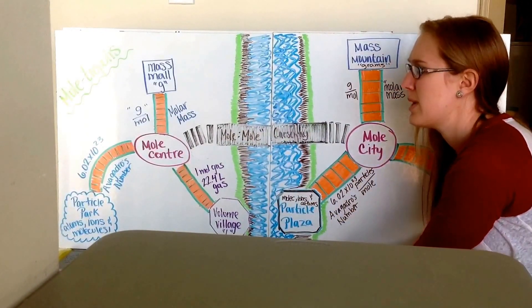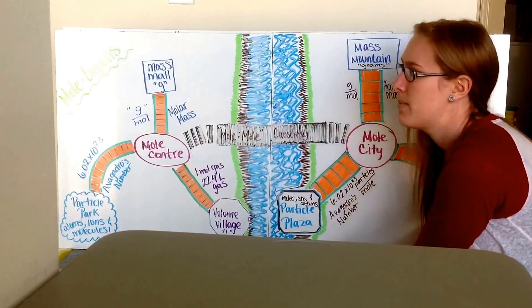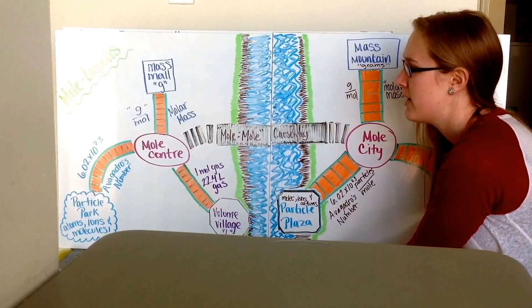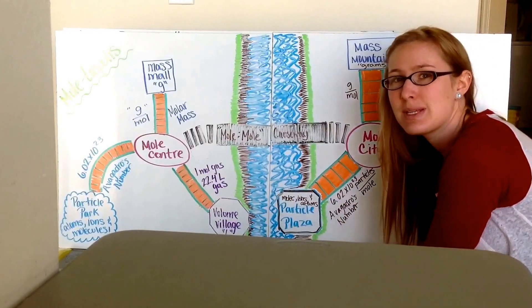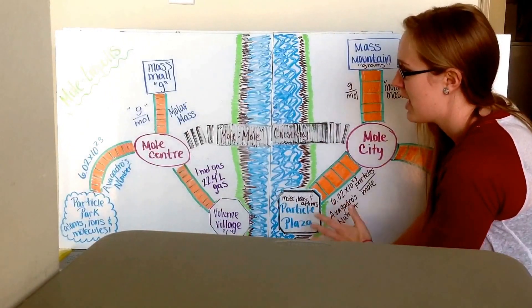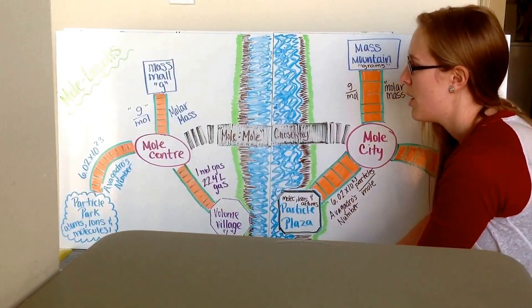And now the reason that we have to convert to moles is the amount of grams of something per amount that we have varies, whereas moles is always constant because it's based off the number of particles. So we have to convert everything to moles in order to move across.